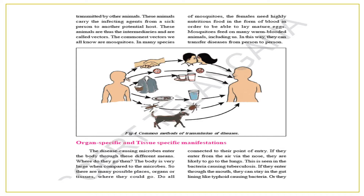The commonest vectors we all know are mosquitoes — they cause malaria. In many species, the female mosquitoes need highly nutritious food in the form of blood in order to be able to lay mature eggs. Mosquitoes feed on warm-blooded animals including us. In this way, they can transfer disease from person to person.